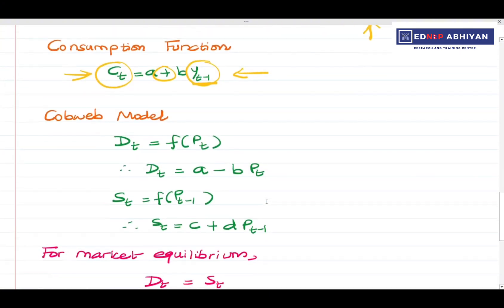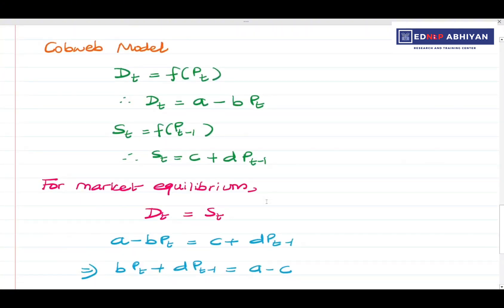The next economic application is the Cobweb model. Demand at time t is a function of price at time t: Dt equals a minus b times Pt. Supply at time t is a function of price at the previous period. There is a negative relationship between price and demand.